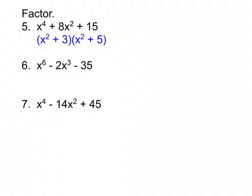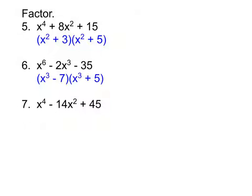For number 6, we have x to the sixth, then x to the third — the 3 is half of 6 — and no constant x term, so it fits the pattern. Each binomial starts with x cubed, which is always the same as that middle exponent. We need two numbers that add to negative 2 and multiply to negative 35: that's negative 7 and positive 5. So the factored form is x cubed minus 7 times x cubed plus 5.